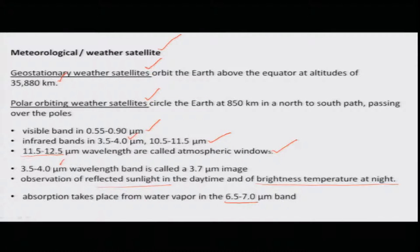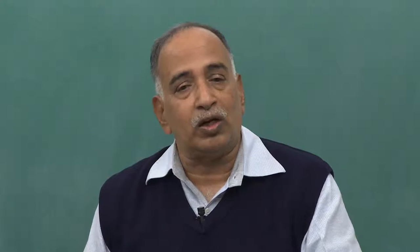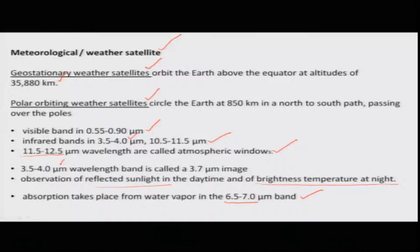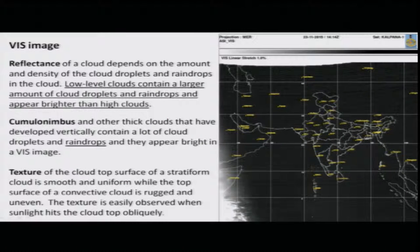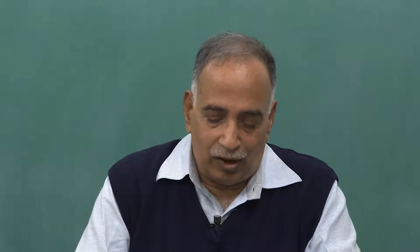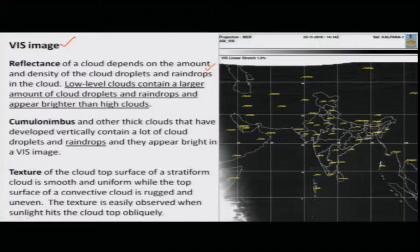The water vapor band is at 6.5 to 7 micrometer wavelength, which allows you to observe the water content in cloud patterns. The previous infrared band gives temperature variation information. In the visible image, reflectance from cloud surfaces is studied, which tells you about the type of cloud pattern, the droplet structure, and how many raindrops are in the clouds. The texture reveals whether it is a stratiform structure or a convective cloud, which is rugged and uneven — these structures are easily observed when sunlight hits the cloud top obliquely.